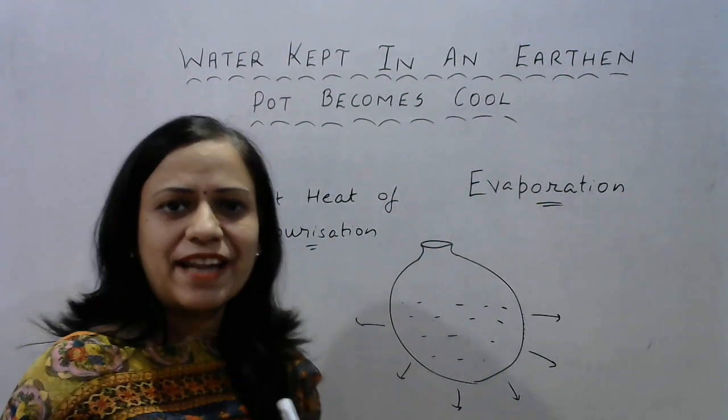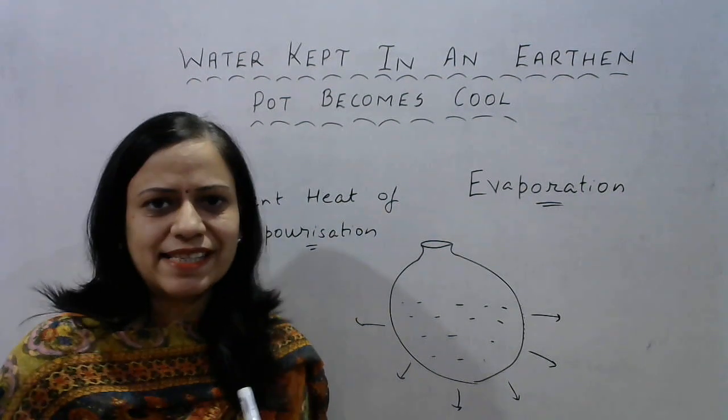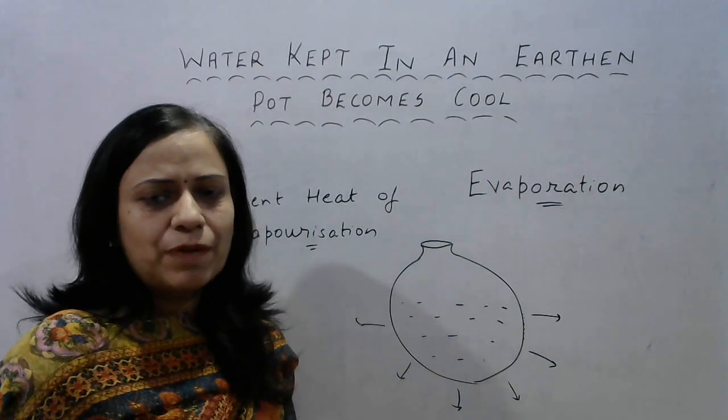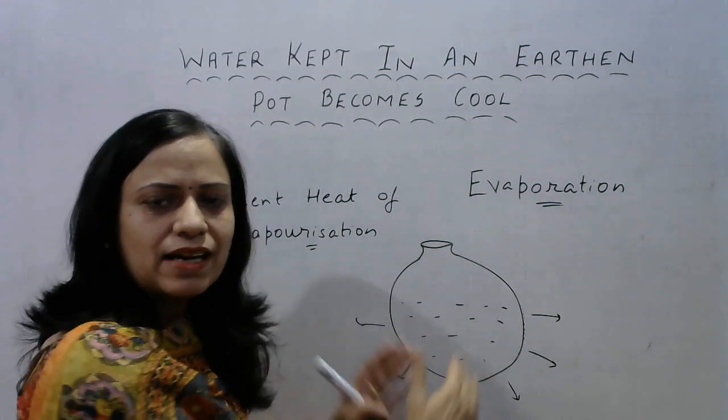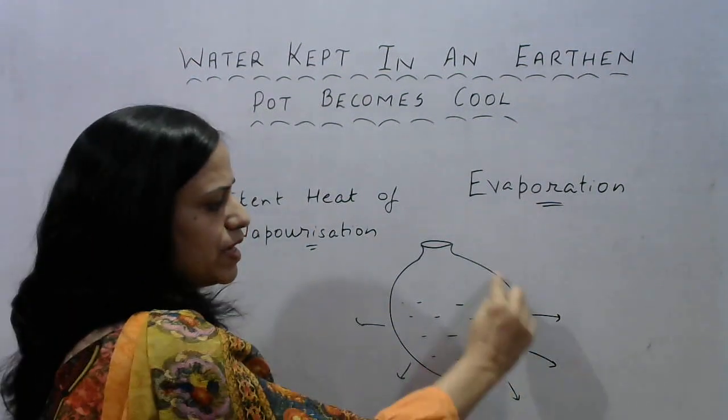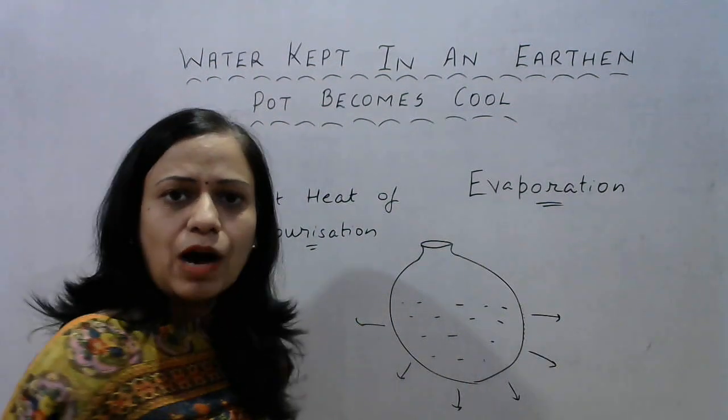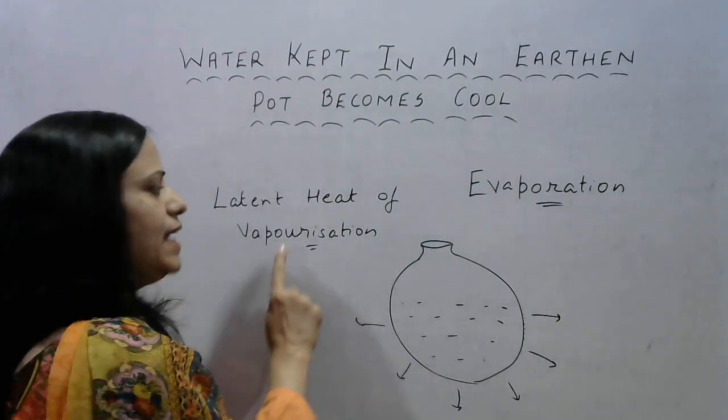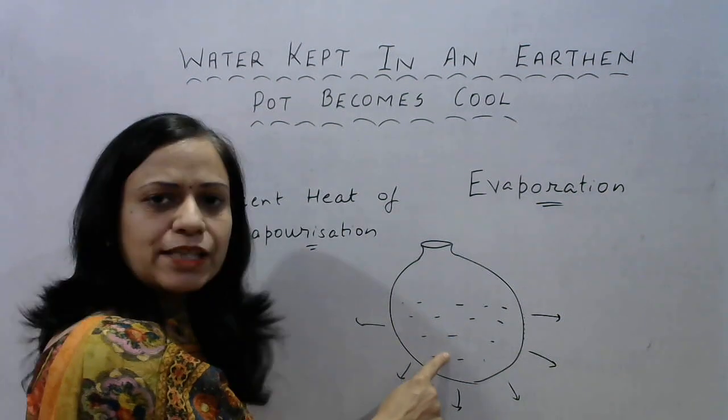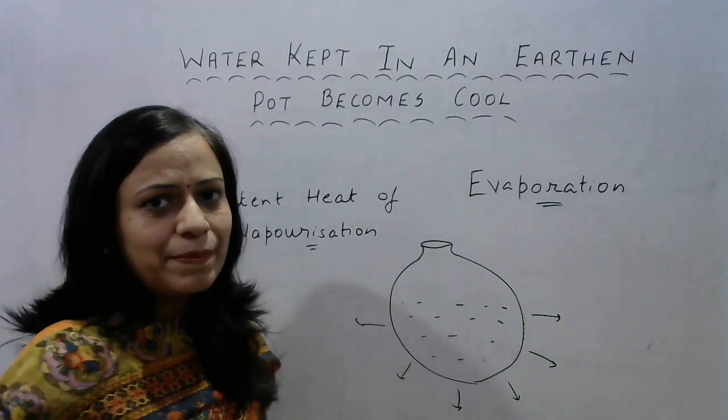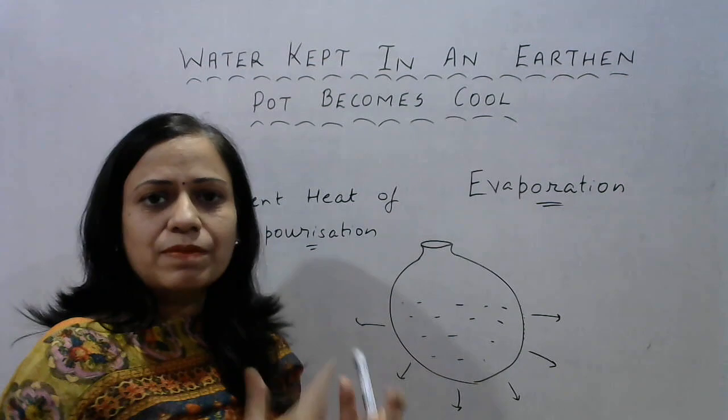I hope this concept is clear to everyone, how the water kept in an earthen pot becomes cool during the summer season. Again, a quick recap: the earthen pot is made up of clay and the walls are porous, due to which the water placed inside the pot starts oozing out a bit, which keeps the walls of the pot moist. When this water evaporates from the outer surface of the pot, it absorbs the latent heat of vaporization required for the change of state from the water present inside the pot, which decreases the temperature of the water inside the pot.